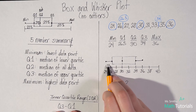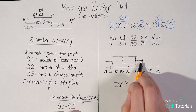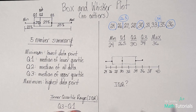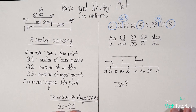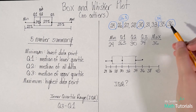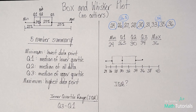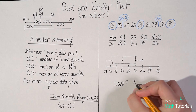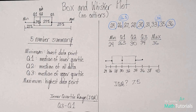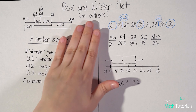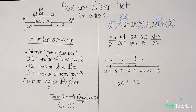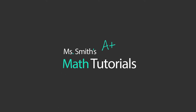This is 25% of my data, 25%, 25%, and 25%. Let's get in the habit of finding the IQR. To find my IQR, I take my Q3 and subtract my Q1: 34 minus 26.5 equals 7.5. In my next video, we're going to talk about how to do a box and whisker plot with outliers. If that's what you're looking for, check out the next video. This has been Ms. Smith's Math Tutorials — we'll see you next time.